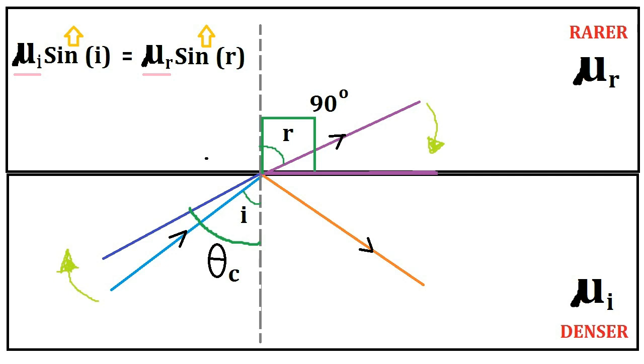If we continue increasing the angle of incidence from this point, the light starts to get completely reflected. That is, no light gets refracted from now. The complete reflection of light within the medium is called total internal reflection.